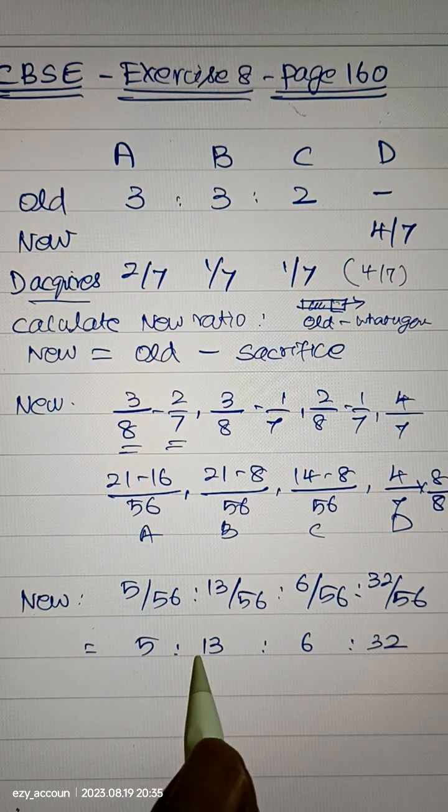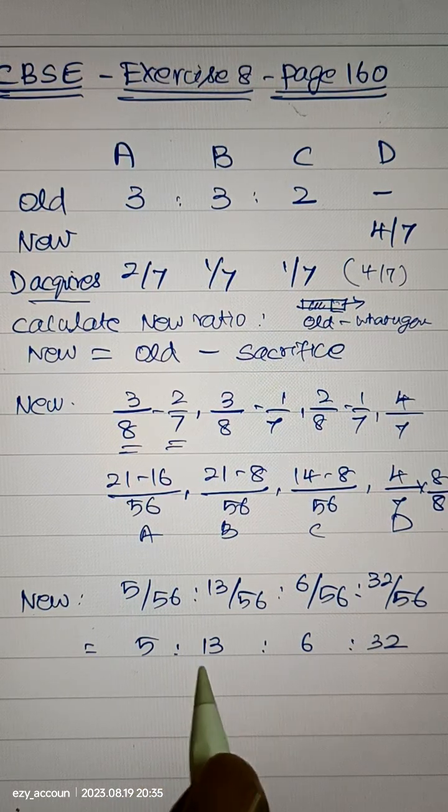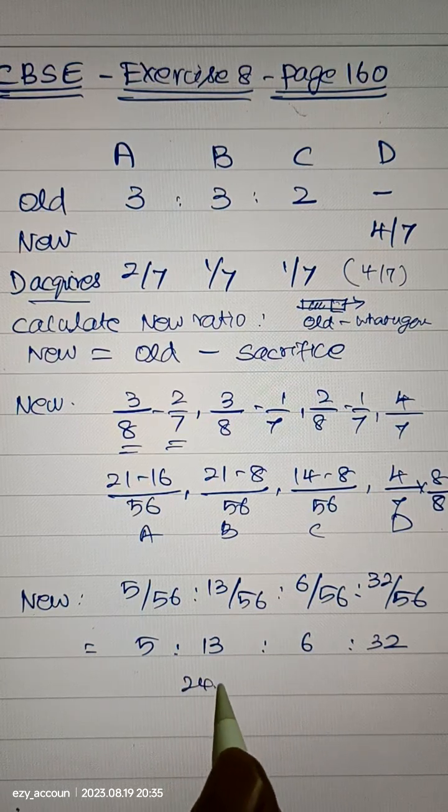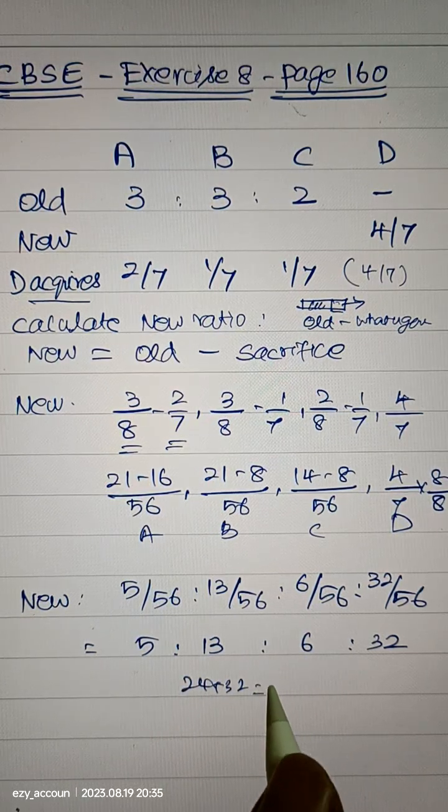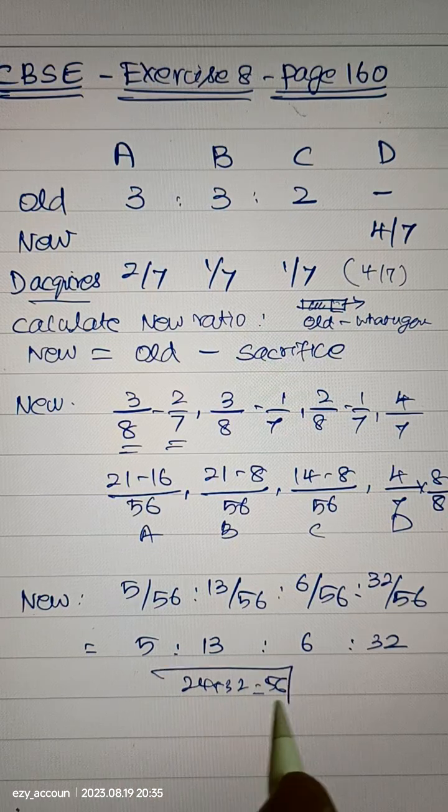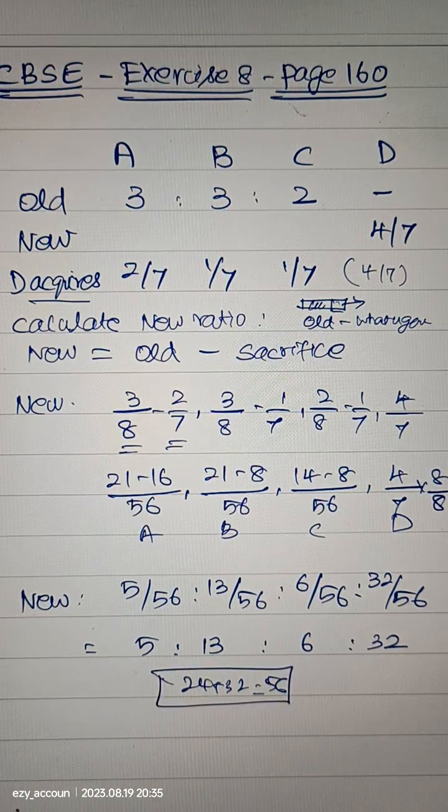So 13 plus 5 is 18, 18 plus 6 is 24, 24 plus 32 equal to correct, 56. This is only just a cross verification.